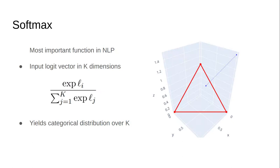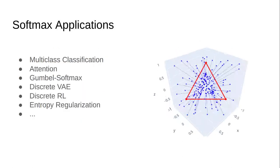Softmax takes as input a vector in k-dimensions, which we'll call the logit vector. This vector is projected to produce a categorical distribution over k different values by exponentiating each dimension and then normalizing. Softmax is used in about a zillion different applications: multi-class classification, computing attention in models like Transformer and BERT, stochastic algorithms like Gumbel softmax and discrete variational autoencoders, and techniques like entropy regularization.